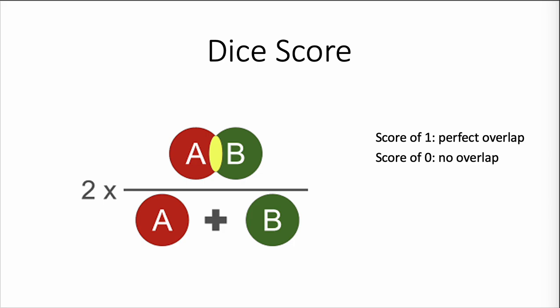Here we have the formula. It's very simple. You have the overlap between sets A and B, multiplied by 2, divided by A plus B. This gives you a score of 1 if you have perfect overlap between the two sets, and a score of 0 if you have no overlap.